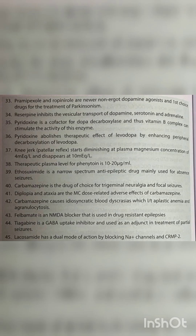Pramipexole and ropinirole are newer non-ergo dopamine agonists and first-choice drugs for the treatment of Parkinsonism. Reserpine inhibits the vesicular transport of dopamine, serotonin and adrenaline. Pyridoxine is a cofactor for dopa decarboxylase, and thus vitamin B complex can stimulate the activity of this enzyme. Pyridoxine abolishes the therapeutic effect of levodopa by enhancing peripheral decarboxylation of levodopa.